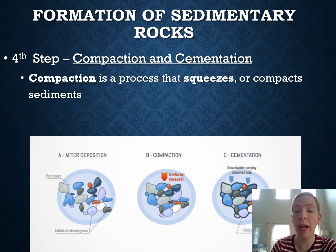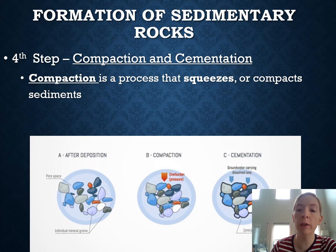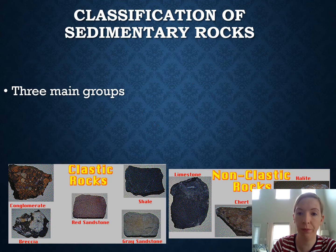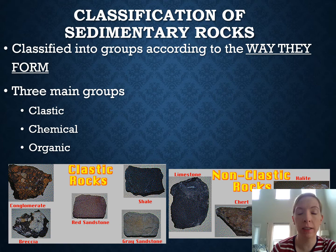The next step is compaction and cementing. Sediments settle on the bottom of a calm body of water, and over time more sediments pile on top, burying and compacting the existing ones underground. Dissolved minerals are then deposited between those grains, cementing them together like glue. We have three main groups of sedimentary rocks: clastic, chemical, and organic. Remember that organic in science means something that is alive or once was alive.